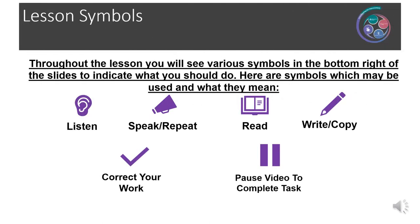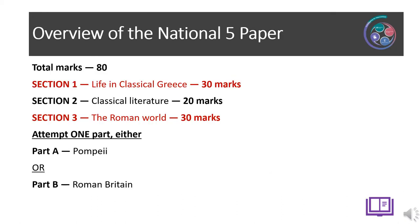At the bottom right of each slide, you will see various symbols which will indicate what you should be doing on that slide. The symbols we will be using are: read, pause video to complete tasks, write or copy, or correct your work. Your National 5 paper totals 80 marks and is divided into three sections.